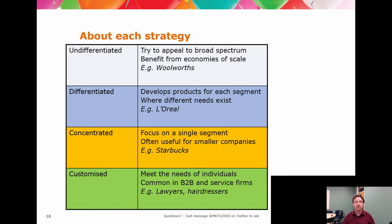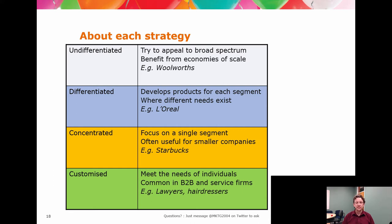In terms of differentiated strategies — different needs, different products for each segment — we see this a lot. Apple is appearing less and less so to do this, until you realise that the one device, the iPhone, is pitched as a phone, as a camera, as a portable computer, as a platform for applications, as a platform for music — and then you suddenly realise that actually they're selling different core products. The actual physical product is the same. There's a small sarcastic note here in an Australian text describing Starbucks as a smaller company.